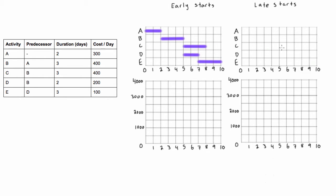Now let's switch to the late starts. By looking at the dependencies, we don't actually need to draw the PDM network diagram. You can see that A, B, D, and E are on the critical path, so activity A has to be drawn from 0 to 2 for its late start, same with B at 3 days. Activity D goes from 5 to 7, and activity E goes from 7 to 10.